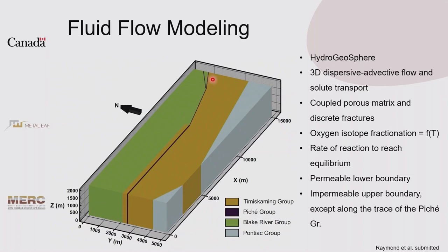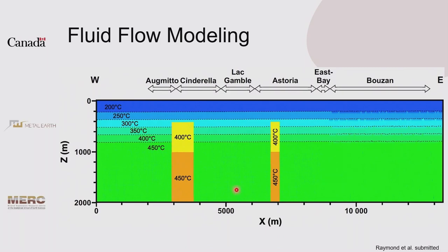The trace of the Larder Lake-Cadillac break is the 70-meter-thick Pichet panel, viewed in long section from west to east. To the north are Blake River Group rocks, Timiskaming Group, and the Pichet within the Timiskaming in the western part and in contact with the Blake River in the eastern part; to the south are Pontiac sedimentary rocks. Each rock type has assigned hydrogeological parameters of porosity and permeability, plus oxygenized top composition. Along the Pichet Group long section, we imposed a thermal gradient comparable to what we observed — more regular outside oreshoot areas and stronger where oreshoot areas are located.